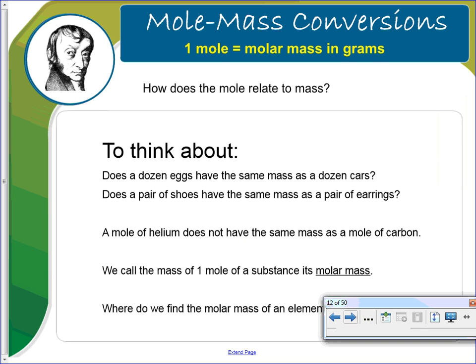1 mole is also equal to the molar mass in grams. So how does the mole relate to mass? So just think about this. A dozen, does a dozen eggs have the same mass as a dozen cars? So does 12 eggs have the same mass as 12 cars? We know it does not. We know the cars have more mass. Does a pair of shoes have the same mass as a pair of earrings? We know that they do not. So a mole of helium is not going to have the same mass as a mole of carbon. And we're talking about a mole. We're talking about 6.02 times 10 to the 23rd. We can look on the periodic table and look at the masses of helium and carbon and see that they are different. We call the mass of one mole of a substance its molar mass.